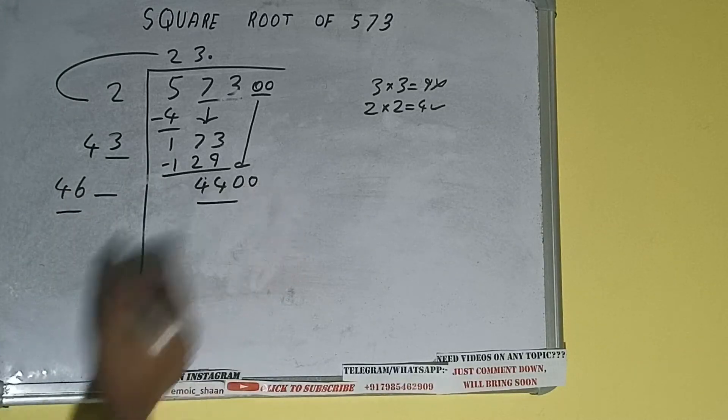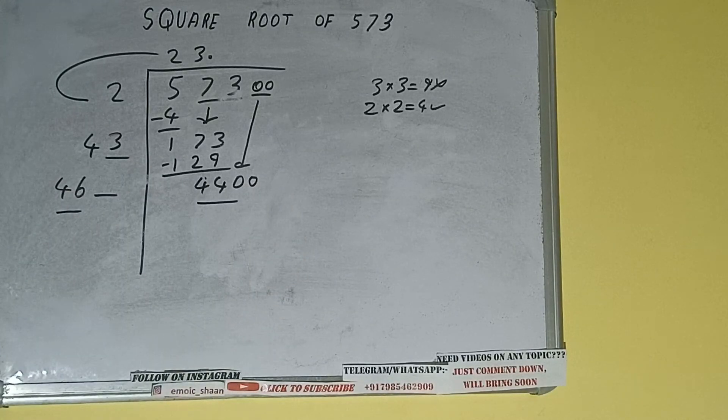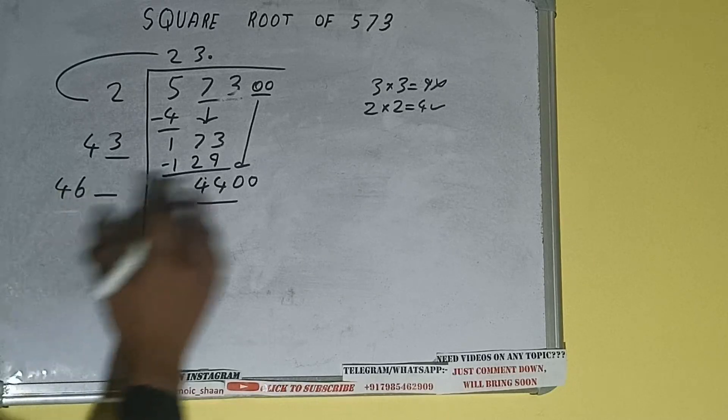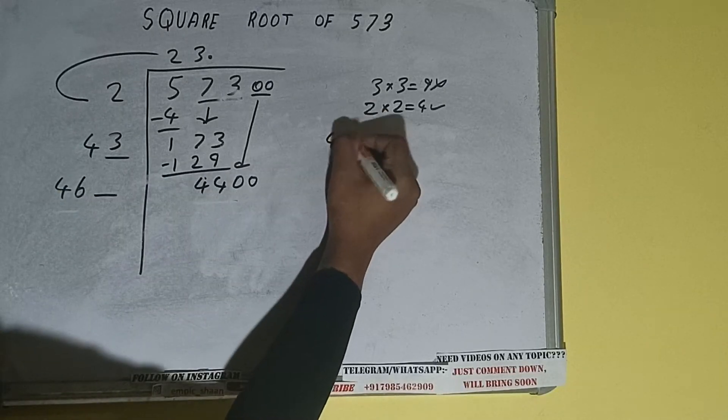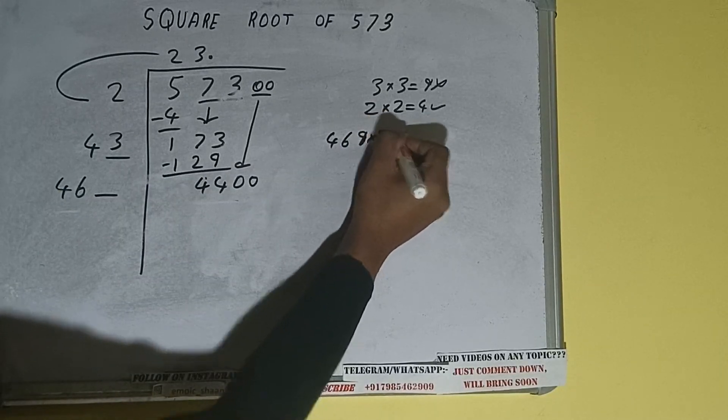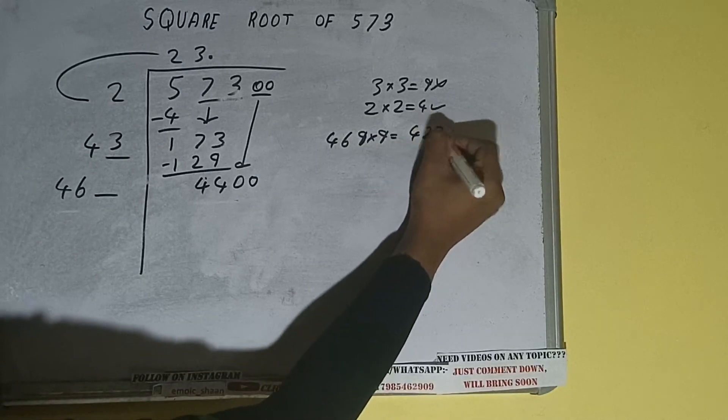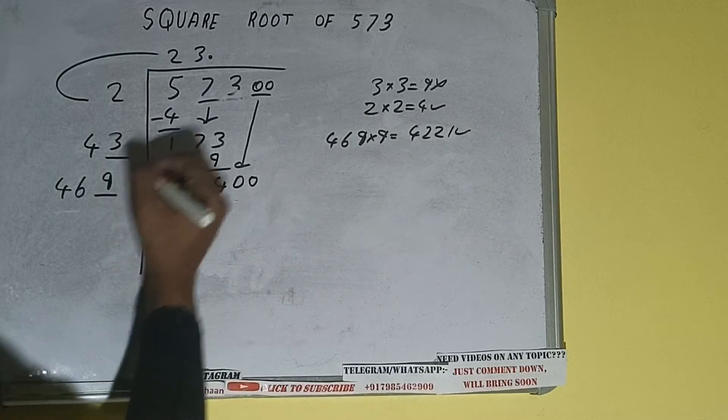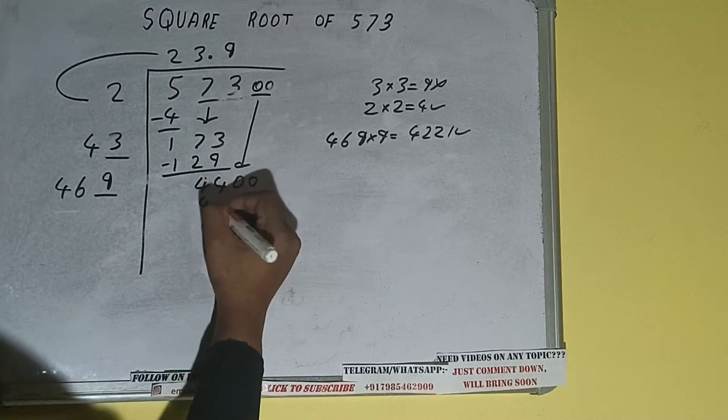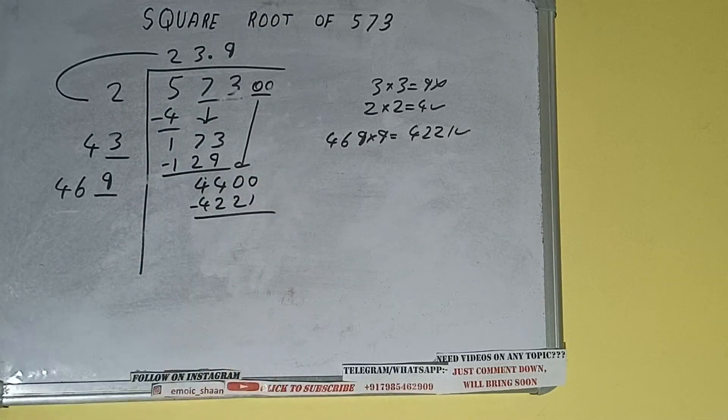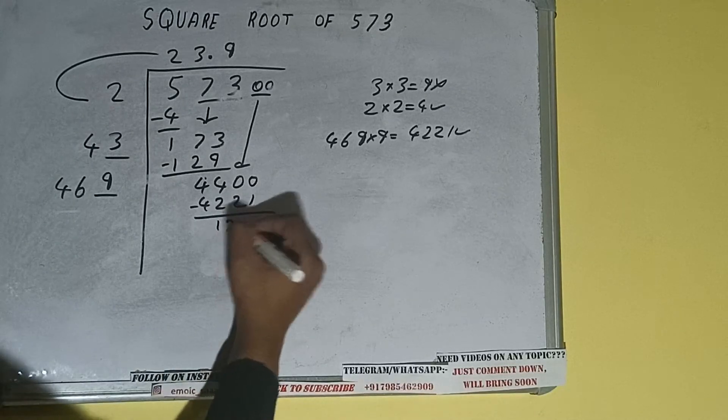Compare this 46 and 440. So 46 times 9 is 414, so we can try 9. 469 into 9 we can try. And we'll be getting 4221 which is good to take. So 9 here, 4221 subtract. And we'll be left with 179.